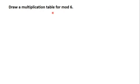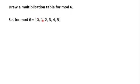We learnt in the previous video that when you are asked to draw a table for an operation in a given modulus, the first thing you have to do is to define the set of values in that modulus. Here, we are being asked to draw a multiplication table for mod 6. So the first thing you do is define the set of values used in mod 6, which are 0, 1, 2, 3, 4, 5.